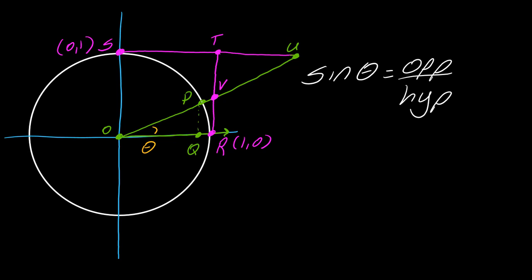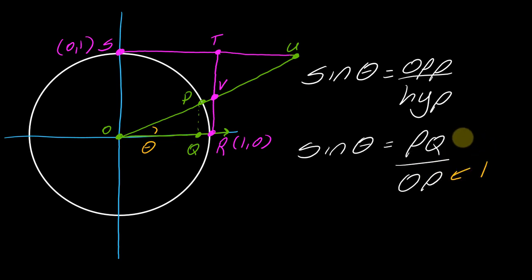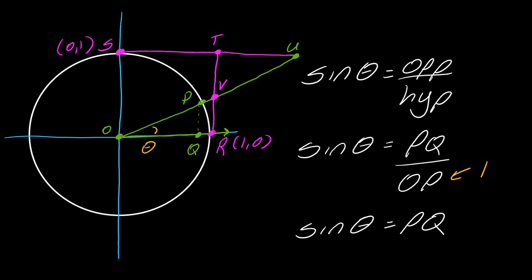Sine of theta is opposite over hypotenuse. Here's my theta, here's my opposite side PQ, and here's my hypotenuse OP. So I can write PQ over OP. Since OP equals one on the unit circle, sine of theta is equal to the length of the line segment PQ — that little line segment right in here.